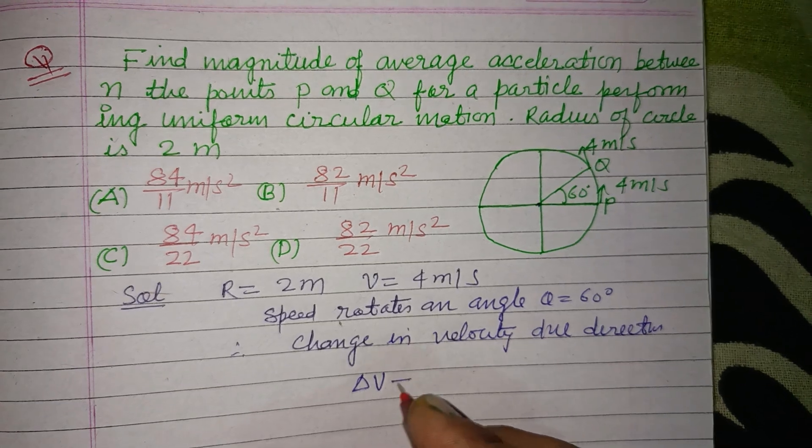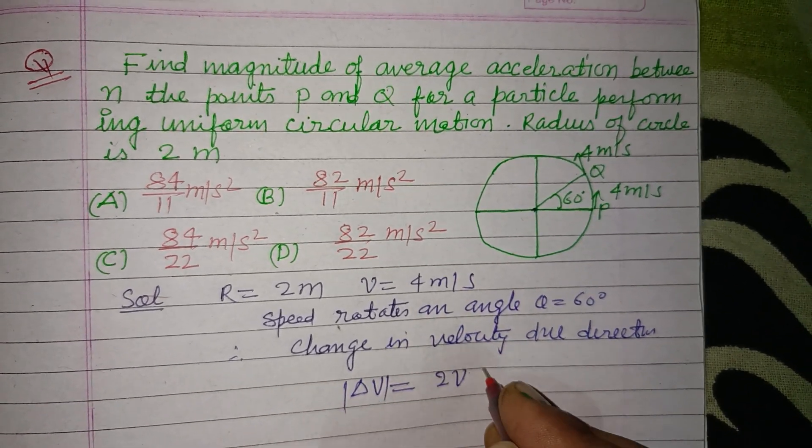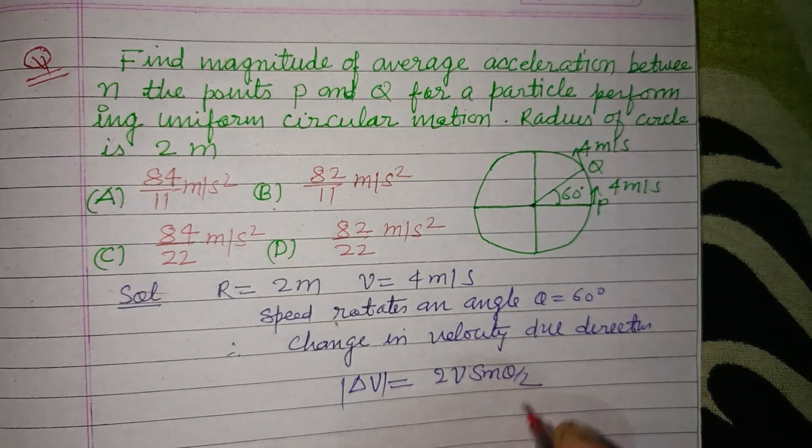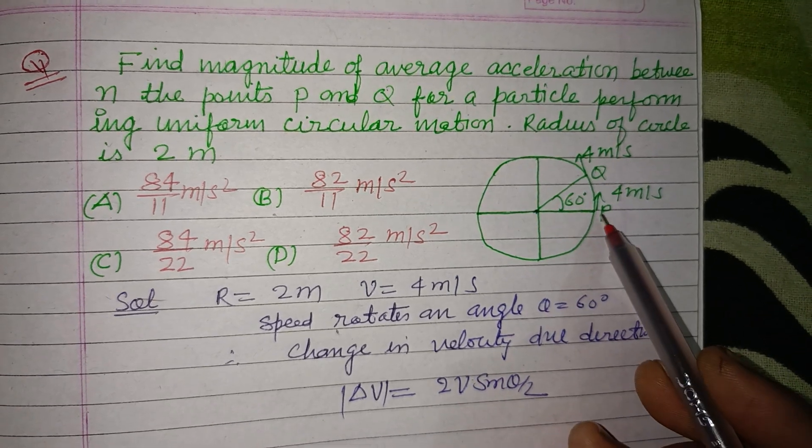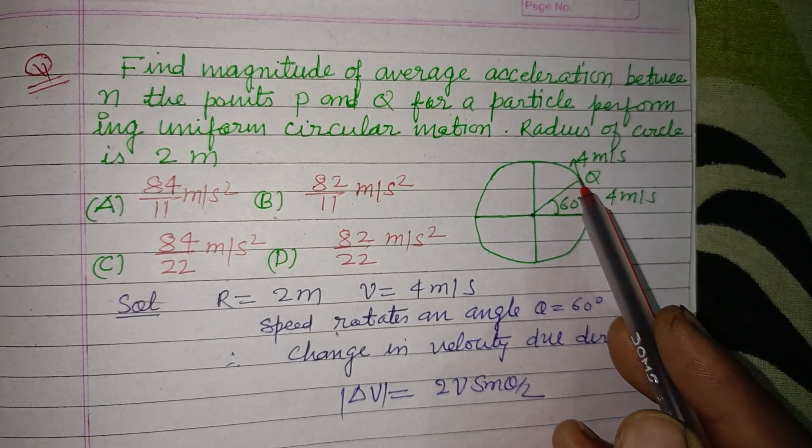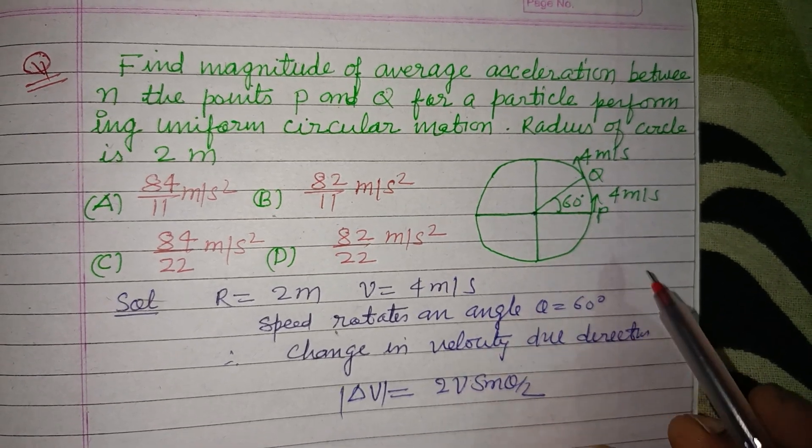So this will be, del v equal to 2v sin theta by 2. If a particle changes its position from P to Q on a circular path with angle theta,